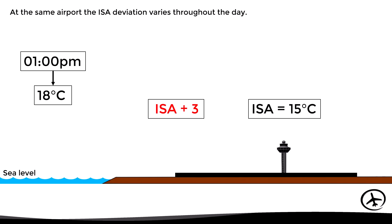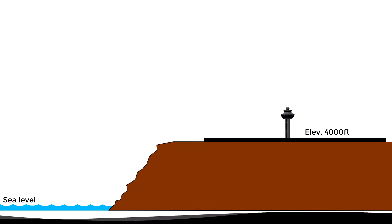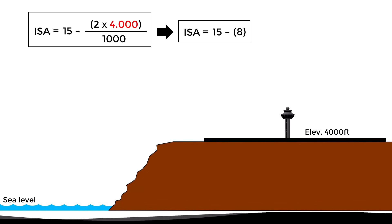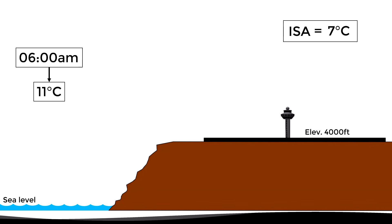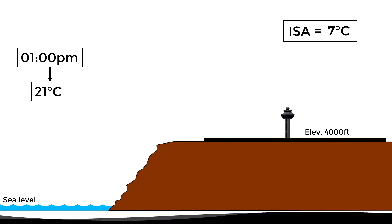This was an easy example since we already know that the standard temperature at sea level is 15 degrees Celsius. Now let's look at an example with a different elevation, say 4000 feet. In order to determine the standard temperature at that airport, we need to know first what is the standard temperature at 4000 feet. Using the formula, we replace the altitude with 4000 and find that the standard temperature at that level is 7 degrees Celsius. Let's suppose that the actual temperature at the airport at 6 am is 11 degrees — the deviation would be plus 4 degrees. And as the day progresses, let's say that at 1 pm the temperature recorded is 21 degrees, making the ISA deviation plus 14 degrees.